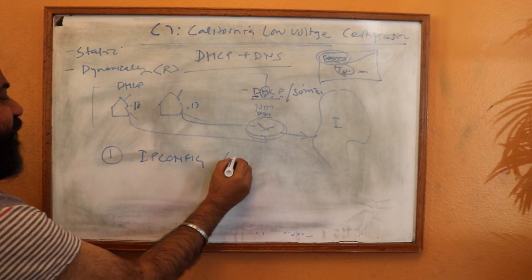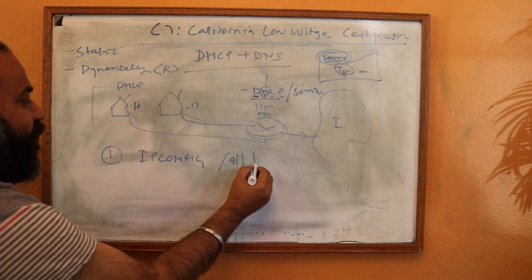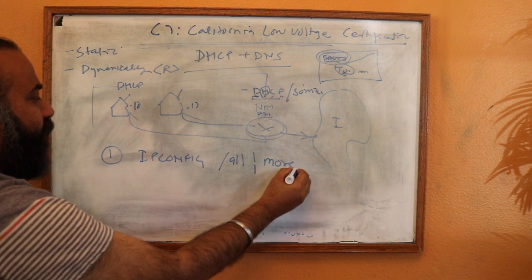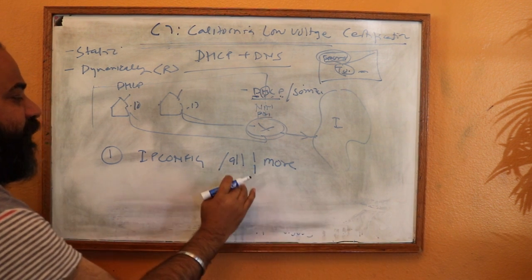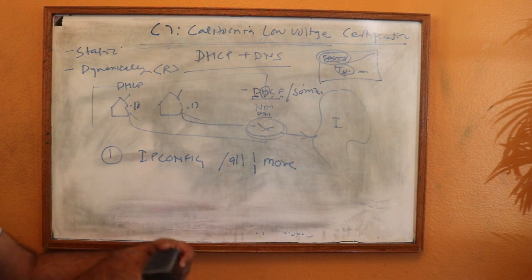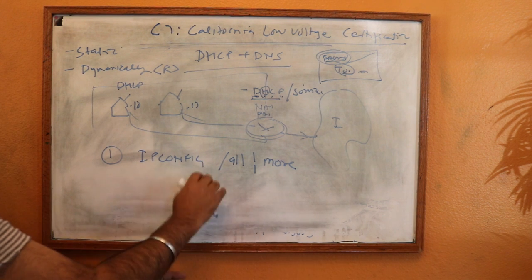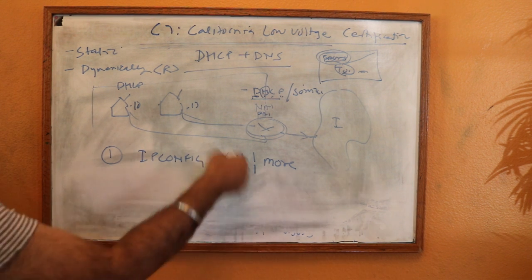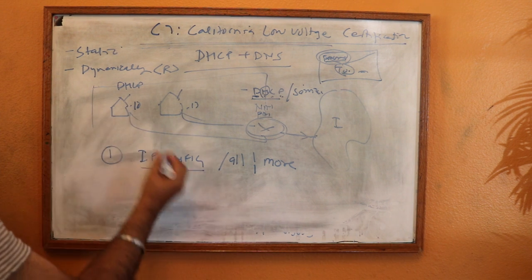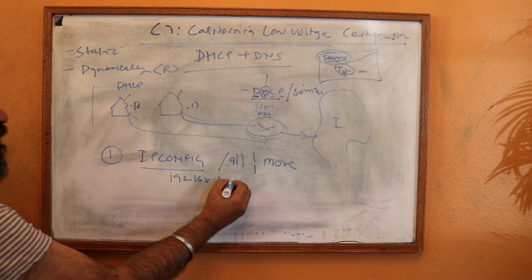Run ipconfig /all to show everything. You can also pipe it with 'pipe more' so the configuration doesn't scroll past quickly — it will pause and wait for you to press the spacebar. Look for your IP configuration and see if you got a local IP address. In a home network you'll typically see 192.168.x.x or similar.